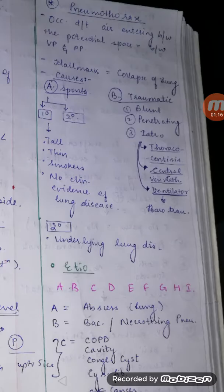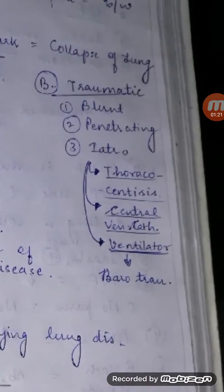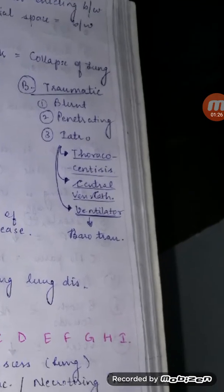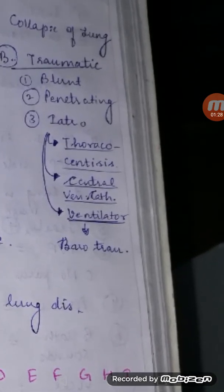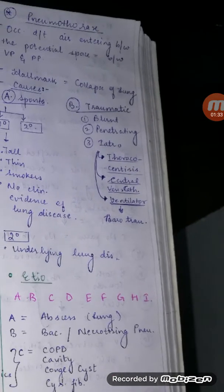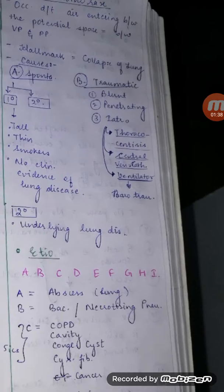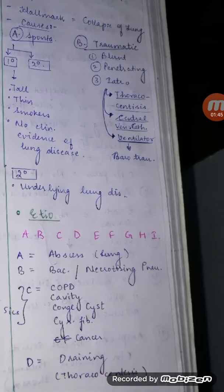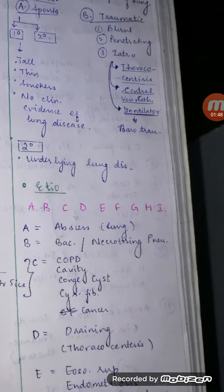Traumatic can be because of both blunt as well as sharp trauma — blunt trauma, penetrating trauma, and iatrogenic, for example thoracocentesis, central venous catheter placement, and ventilator-related barotrauma. When you put a large bore needle trying to aspirate fluid collected due to pleural effusion, or during central venous catheterization, ventilator-associated barotrauma can also occur.